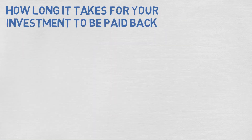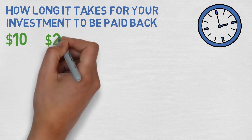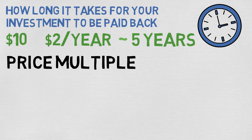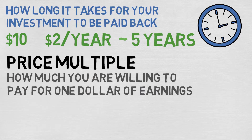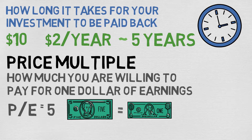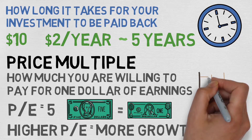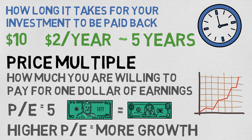Secondly, the price to earnings ratio tells us how long it takes for your investment to be paid back. If you invested $10 and received $2 every year, it takes around 5 years to get that $10 back. It's also sometimes referred to as the price multiple, meaning how much you are willing to pay for $1 of earnings. When the PE ratio is 5, it means you are willing to pay $5 for $1 of current earnings. The higher the PE ratio, the more growth investors are expecting from the company, because they are willing to pay more dollars to get that $1 of current earnings.